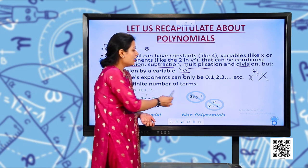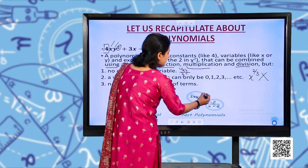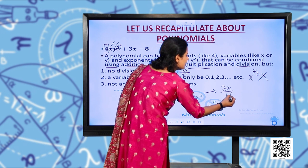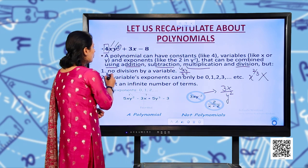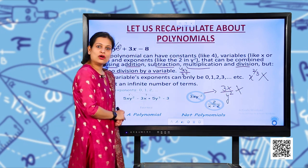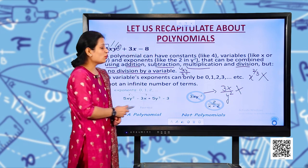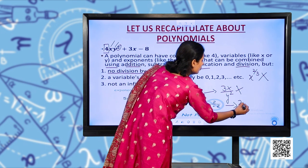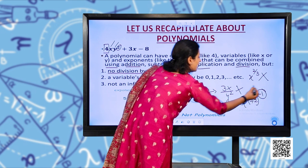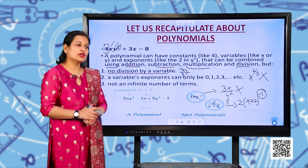One more example: 3xy⁻². You can rewrite this as 3x/y², which involves division by a variable — so this is not a polynomial. Similarly, 2/(x+2) becomes 2(x+2)⁻¹, and the exponent −1 is not in the form 0, 1, 2, 3. So this is also not a polynomial.